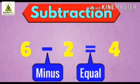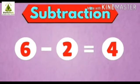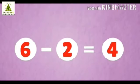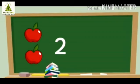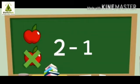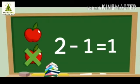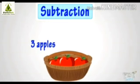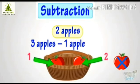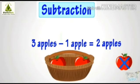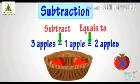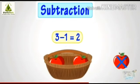This is called the minus symbol, and the two sleeping lines are called equal to. So six minus two is equal to four. Here is another example: there are two apples, one is taken away — two minus one is equal to one apple. And another example: there are three apples in the basket, one apple is taken away — three minus one is equal to two apples.